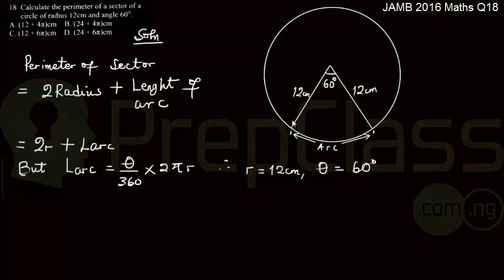We can see the sector given with a radius of 12 cm. The angle subtended at the center is 60 degrees. We also have an arc.